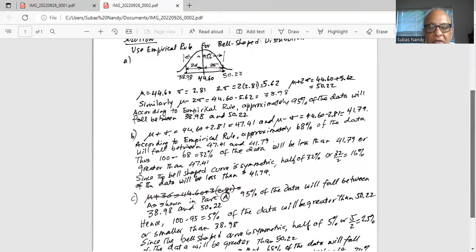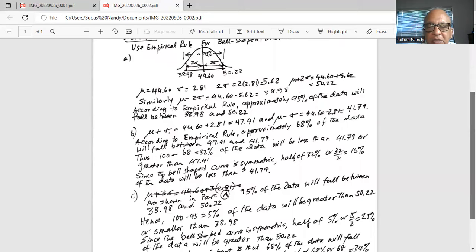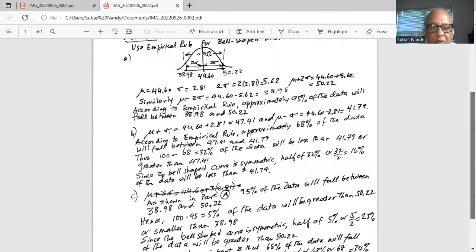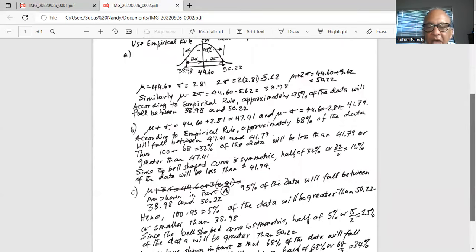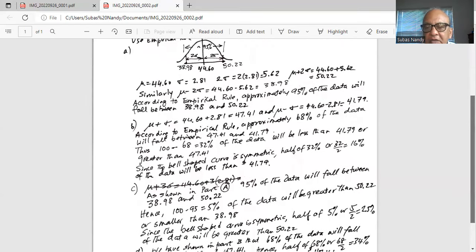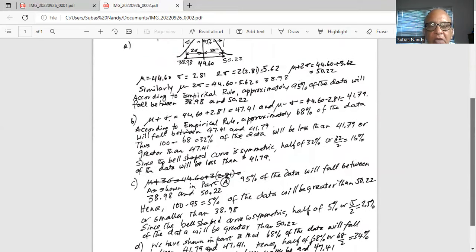So hence 100 minus 95 is equal to 5% of the data will be greater than 50.22 or smaller than 38.98. Since the bell-shaped curve is symmetric, half of the 5% or 5 divided by 2 is equal to 2.5% will be greater than 50.22.